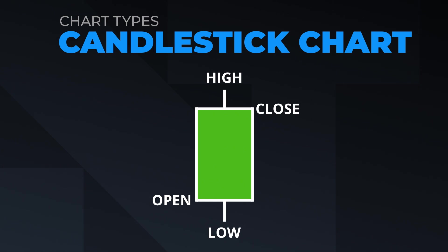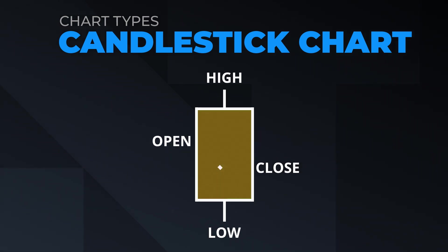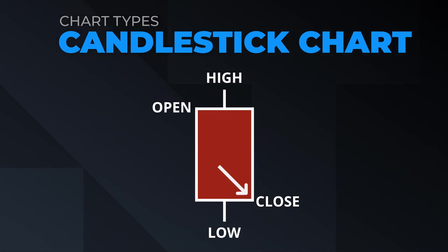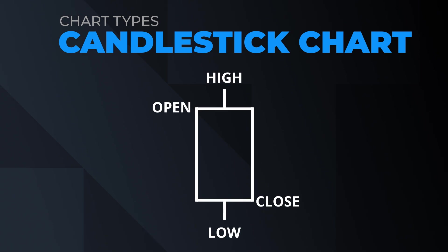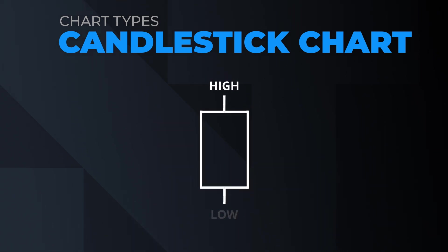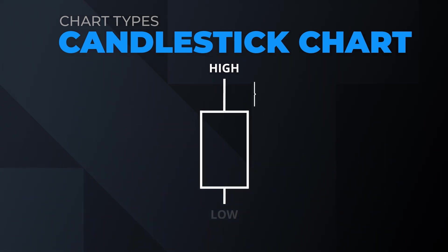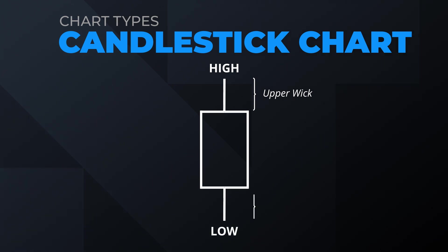When the close is below the open, the candle is bearish and colored red. The distance from the top of the body to the high is called an upper wick, and from the bottom of the body to the low is the lower wick.